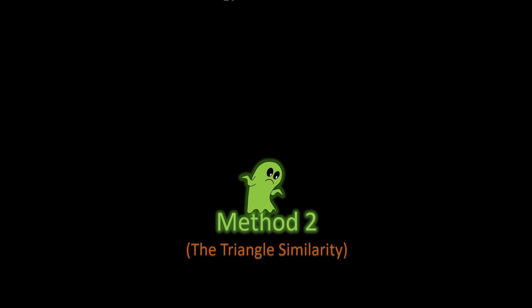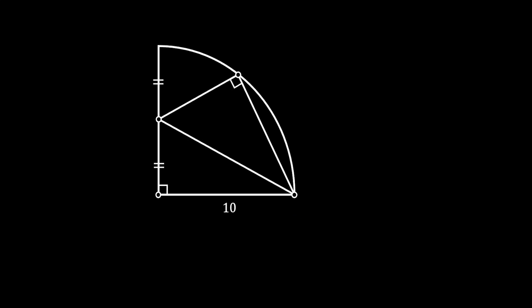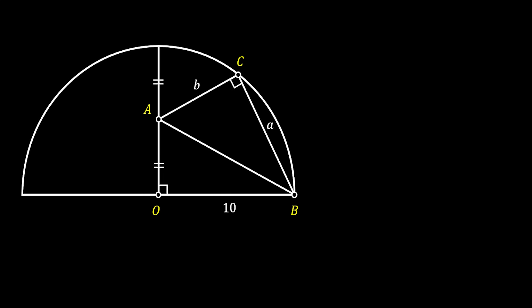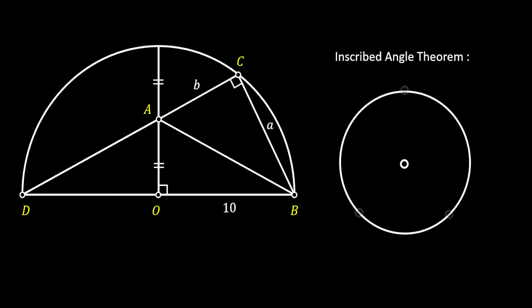Now let me show the second method using triangle similarity. We label the vertices, legs a and b, and center O as before. Thinking outside the box, we extend the quarter circle to form a half circle, then extend line AC. This extended line ends up at point D at the far end of the diameter of our half circle. We verify this using the inscribed angle theorem.